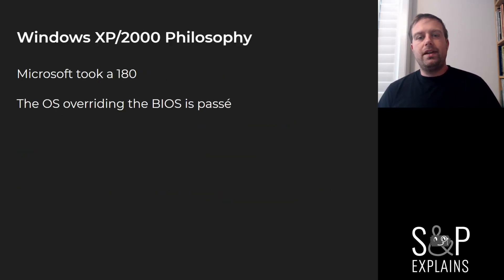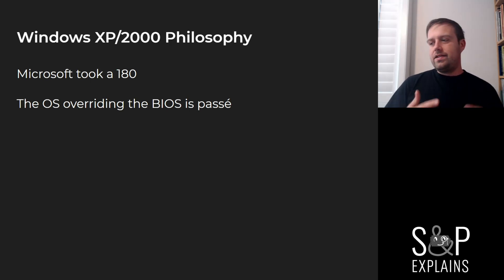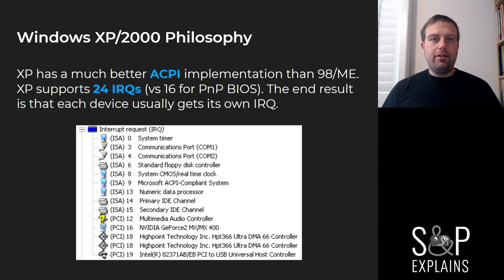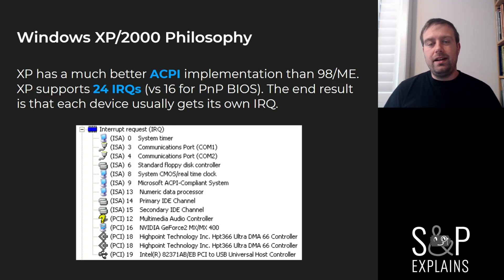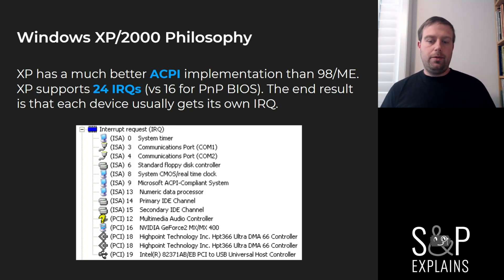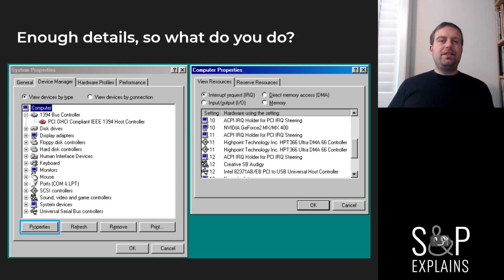Windows XP and 2000 have a completely different philosophy. They decided that overriding the BIOS was a bad idea and it's not recommended — though that doesn't mean you can't do it; we're going to cover ways to do it. The saving grace is that Windows XP has a much better ACPI implementation. ACPI actually supports an extra eight IRQs. On this same system, you can see that all the cards have been moved to their own IRQ, with the exception of the UltraDMA controller.